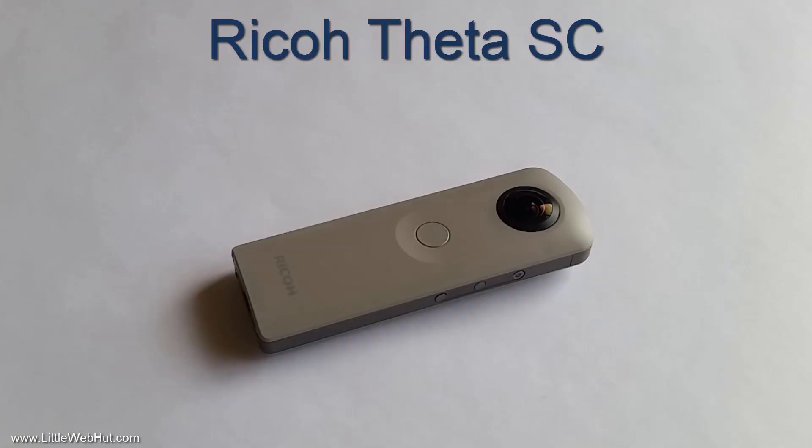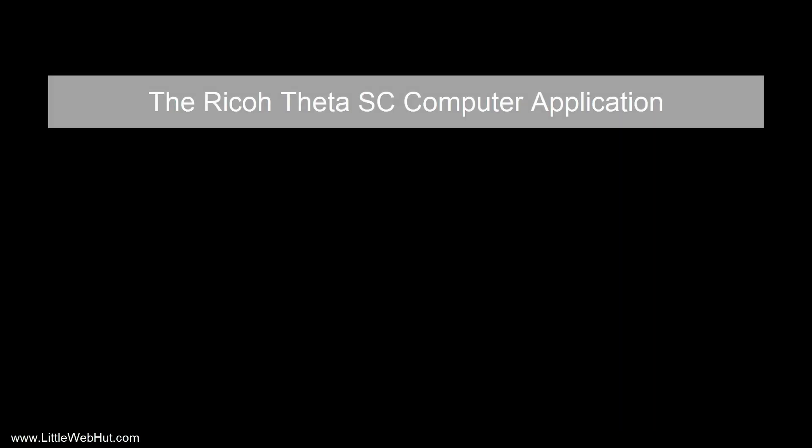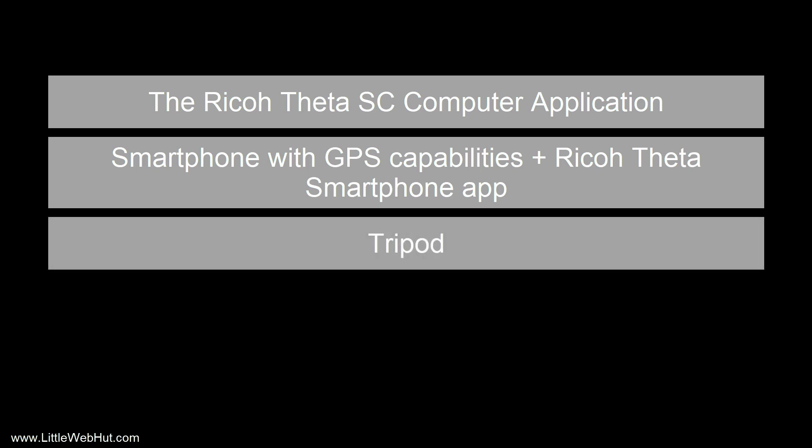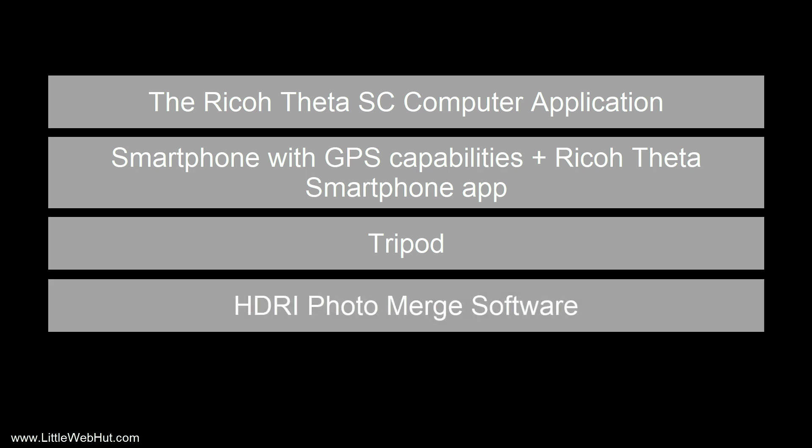To use the Ricoh Theta SC to produce high dynamic range images, you also need the following: the Ricoh Theta SC computer application, which runs on your PC and can be used to update the camera's firmware. The camera firmware needs to be a newer version that supports multi-bracket shooting. You need a smartphone with GPS capabilities along with the Ricoh Theta app to control the camera for capturing multiple exposures. You need a tripod to hold the camera still for multi-bracket shooting. And you need a software application to merge the multi-bracketed photos together. I use software called Easy HDR — it's not free, but it seemed like a good value to me.